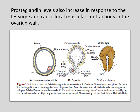The secondary oocyte, together with its surrounding granulosa cells from the region of the cumulus oophorus, will break free in a process called ovulation. The secondary oocyte is therefore the stage of oocyte development that is released during ovulation, and it will float out of the ovary. Some of the cumulus oophorus cells will arrange themselves around the zona pellucida to form the corona radiata.